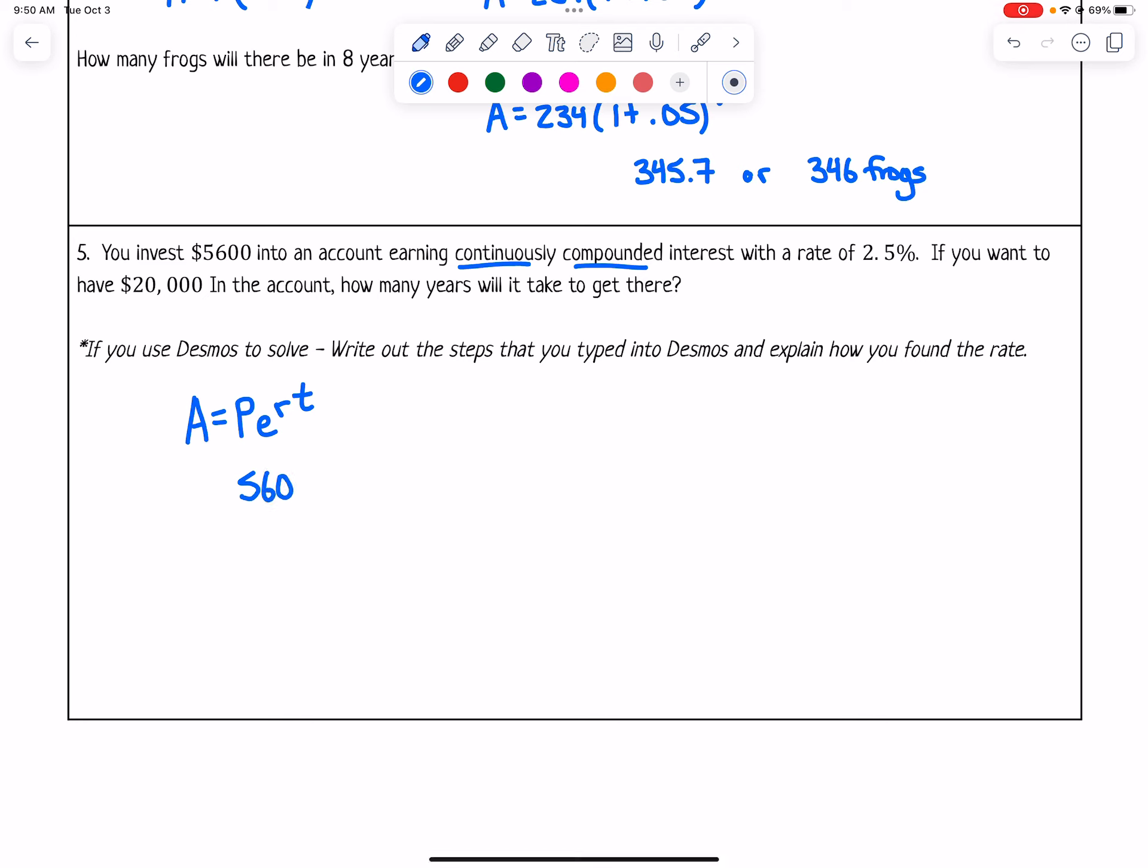We have $5,600 we're starting out with. We have a rate of 2.5%, so that'll be 0.025 when we put it as a decimal. We're going to leave time. We're looking for how many years it will take us to get a final amount of $20,000.